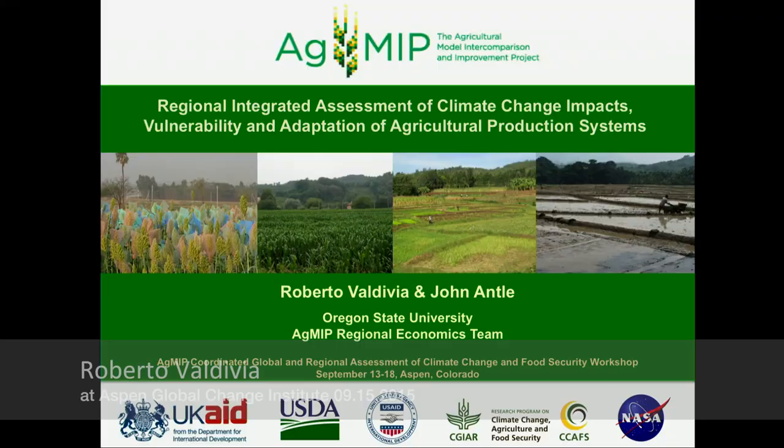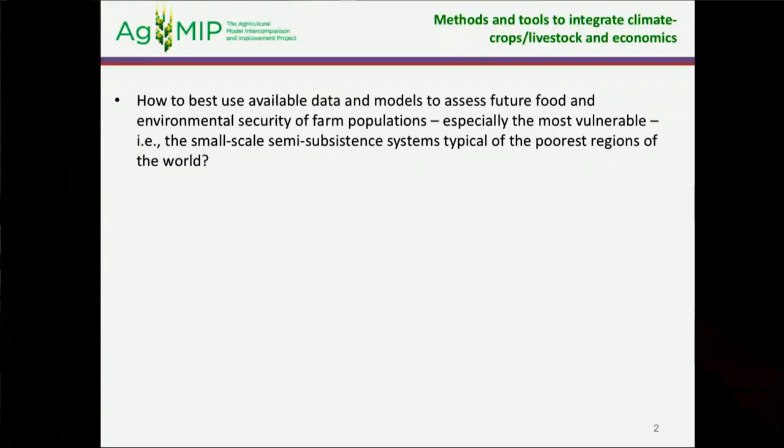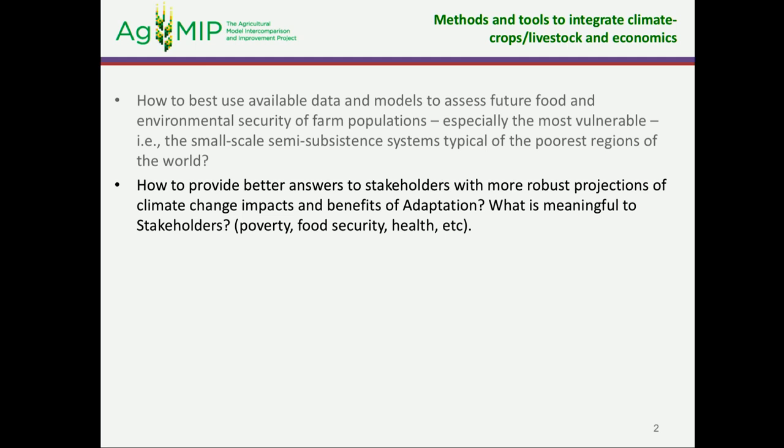I'm going to talk about the regional integrated assessment, but focusing mostly on what the ACMIC research teams are doing in Africa, and they focus probably more on the RAPs. A couple of background questions we should have in mind when implementing this type of methods: how to best use available data and models to assess future food and environmental security of farm populations, in particular in those vulnerable regions, and how to provide better answers to stakeholders with more robust projections of climate change impacts and benefits of adaptation.